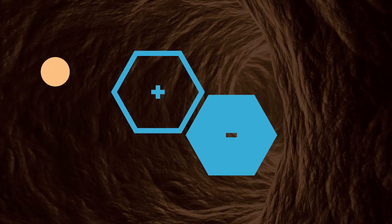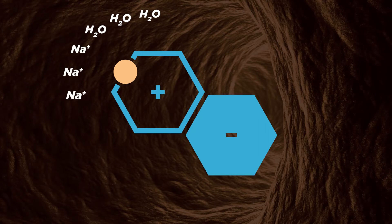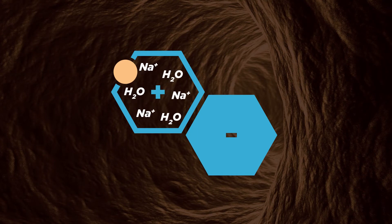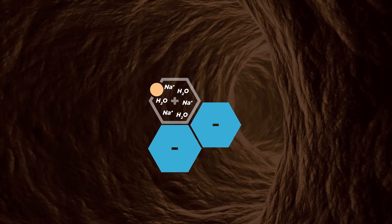Naricin attaches itself to the gram-positive bacteria. Once attached, naricin causes an influx in sodium and water into the gram-positive bacteria, causing the cell to use its energy to maintain osmotic balance. Ultimately, the gram-positive bacteria cell will die. The loss of gram-positive bacteria allows an increase in the concentration of gram-negative bacteria.